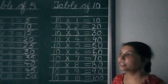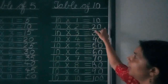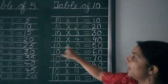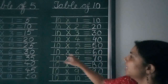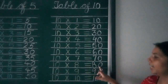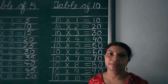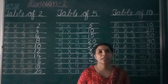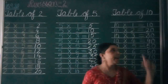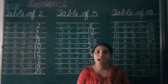Let's revise the table of 10. 10 1's are 10, 10 2's are 20, 10 3's are 30, 10 4's are 40, 10 5's are 50, 10 6's are 50, 10 7's are 70, 10 8's are 80, 10 9's are 90, 10 10's are 100.